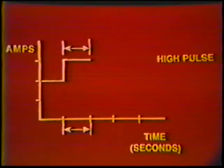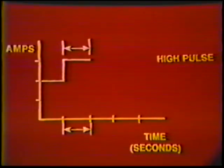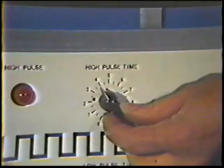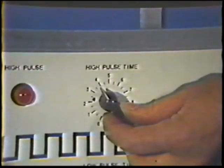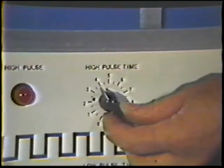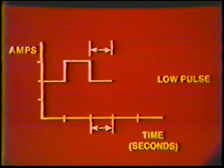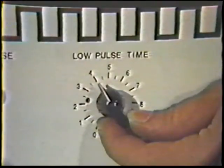The high pulse time is the duration of the high pulse current, and is set to allow the formation of a weld puddle with the desired depth of penetration. The thicker the base metal, the longer the high pulse time. The low pulse time is the duration of the low pulse current and is set long enough to allow movement of the torch.